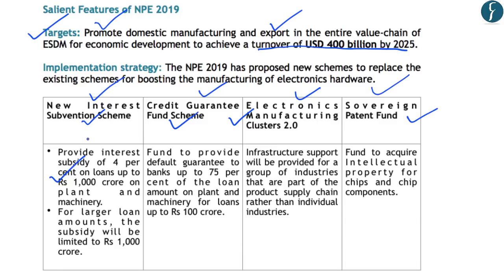If a company takes a loan beyond ₹1,000 crore, the interest subsidy of 4% will be allowed only on the first ₹1,000 crore. For example, if a company takes a loan of ₹3,000 crore, the subsidy applies only on ₹1,000 crore, and for the remaining ₹2,000 crore there will be no interest subsidy. The Credit Guarantee Fund Scheme provides security against loan defaults for banks — if a company defaults, 75% of the amount will be paid by the credit guarantee fund to banks. This scheme is available only for plants investing up to ₹1,000 crore, promoting small and medium sector enterprises.